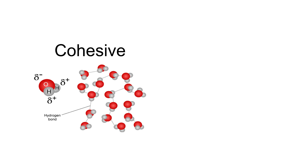Now that is only important for a small number of organisms such as pond skaters, so they can live on the surface of water. But it's actually more important within organisms because it allows water to form continuous columns, such as water that moves through the xylem vessels in a plant, or through the phloem vessels in a plant, or through the circulatory system in animals. So the water in blood can move in continuous columns.